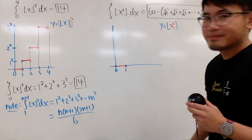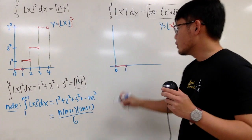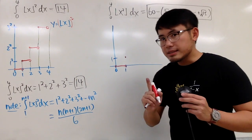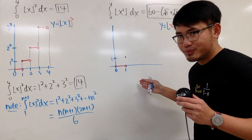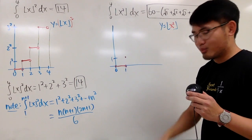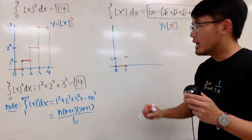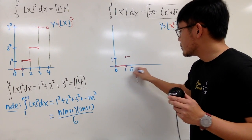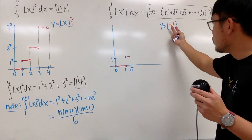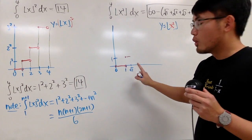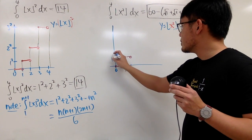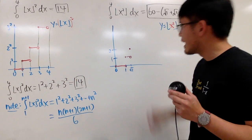When x is 1, 1 squared is 1 and the floor of 1 is 1, so you have 1. But this time, we don't have a horizontal line all the way up to 2. Because when x is √2, (√2)² = 2 and the floor of 2 is 2. So the horizontal line is only good up to √2. When we have x = √2, there is an open circle, and it jumps to 2.